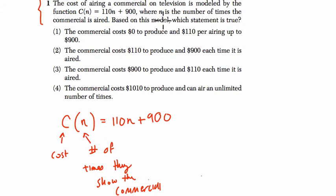Based on this model, which statement is true? If we zoom through these, the one that I think makes the most sense is that the commercial costs $900 to produce and $110 each time it is aired.